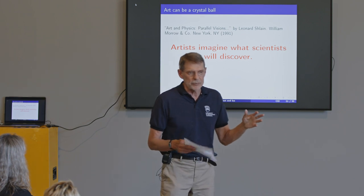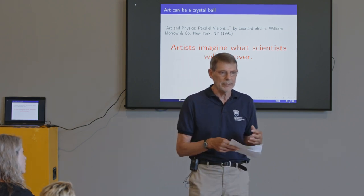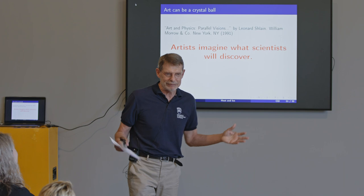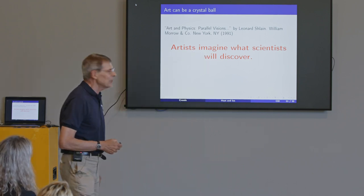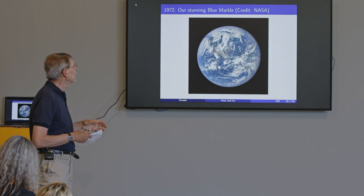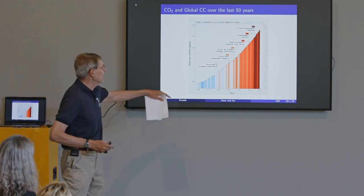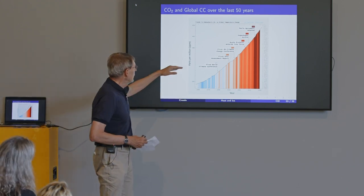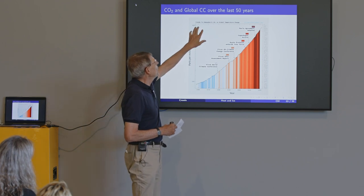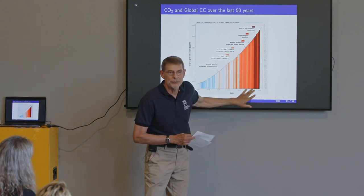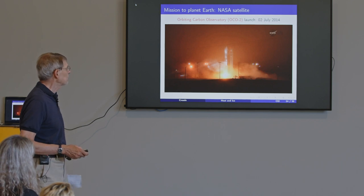I believe that art can be a crystal ball — that artists have a great intuition. They feel things that perhaps scientists can't see. But give me some data and I can see it. Scientists and artists are really seeing things that we are not. This is our stunning blue marble as we needed to look at it in 1972. This particular graph uses colour: when we had 320 parts per million, our temperatures were blue; at 420 parts per million, our temperatures are red. There's a very strong visual message there without being too precise.